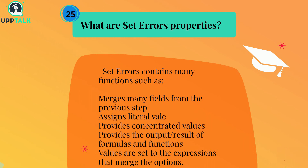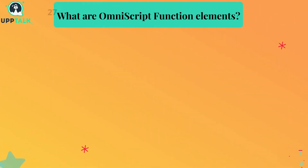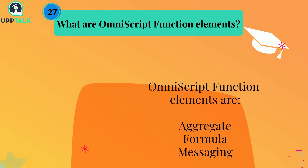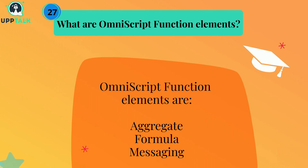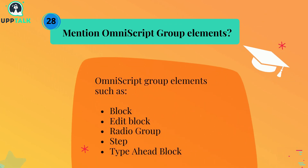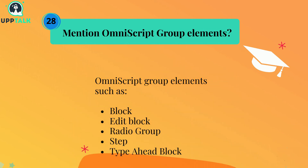What are OmniScript display elements? There are two types of OmniScript display elements present in Velocity, such as blind break and text block. What are OmniScript function elements? OmniScript function elements are aggregate, formula, and messaging. Mention OmniScript group elements — OmniScript group elements include Block, Edit block, Radio group, Step, and Type ahead block.